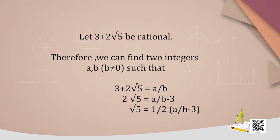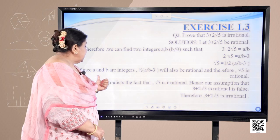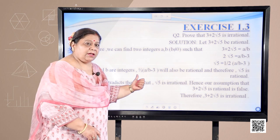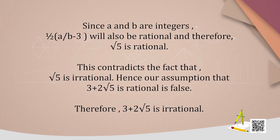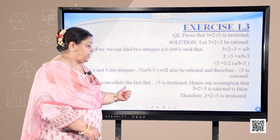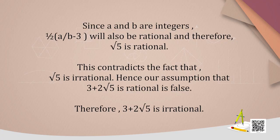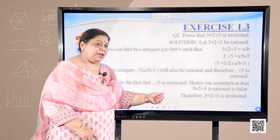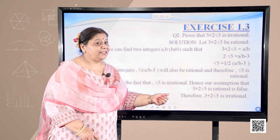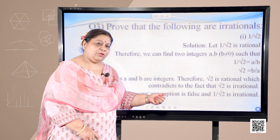This can be rewritten as √5 = (1/2) × (a/b − 3). Since a and b are integers, (1/2)(a/b − 3) will also be rational, and therefore √5 would be rational. This contradicts the fact that √5 is irrational. Hence our assumption that 3 + 2√5 is rational is false, and therefore 3 + 2√5 is irrational.